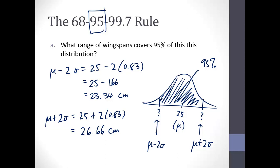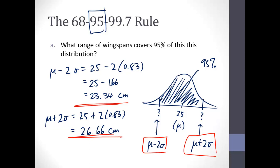We used this information to answer a few questions. We wanted to know what range of wingspans covers 95% of the distribution. Drawing a picture is always a good idea. We wanted to know what those two question marks were such that 95% of the area is between them. From the 68-95-99.7 rule, we simply go down two standard deviations and up two standard deviations to capture 95% of the area. With mean 25 and standard deviation 0.83, that gives us 23.34 and 26.66 as the two endpoints.